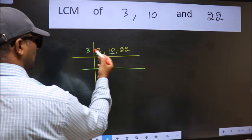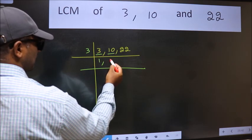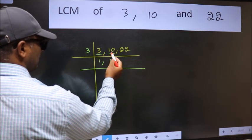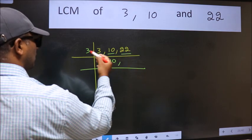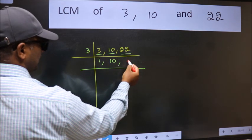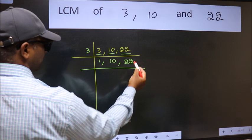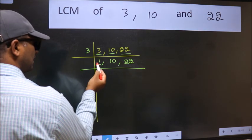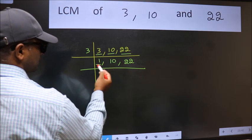The other number, 10, not divisible by 3, so we write it down as it is. The other number, 22, not divisible by 3, so we write it down as it is. Now we got 1 here, so focus on the next number, 10.